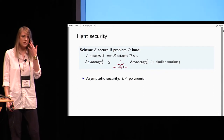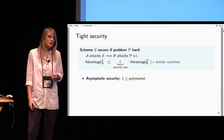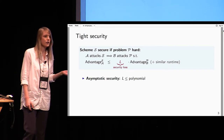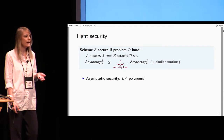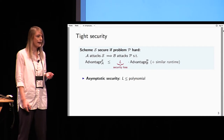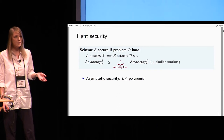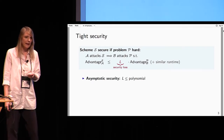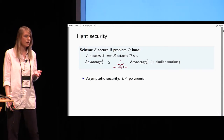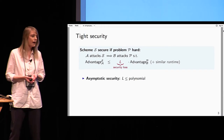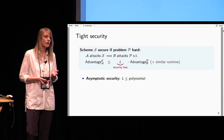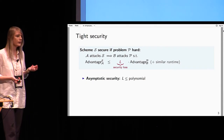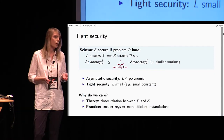As the title says, we're not just interested in security but in tight security. Generally in cryptography we prove a scheme secure by showing that if we find an adversary attacking the scheme, we can construct an adversary attacking some problem which we assume to be hard, and show that the advantage of the adversary attacking the scheme can be bounded by some L times the advantage in attacking the problem. For tight security we want more — namely we want the loss L to be small, for example a small constant.